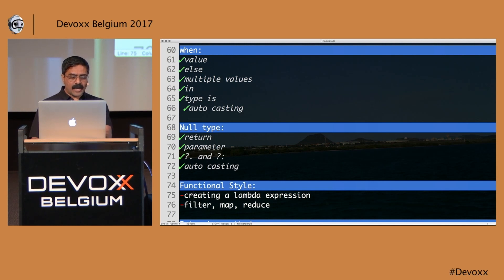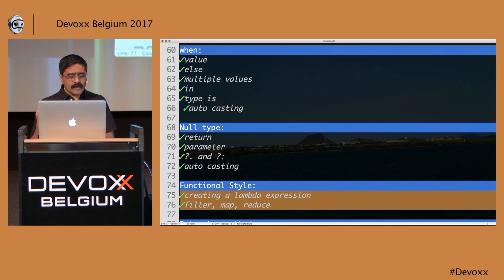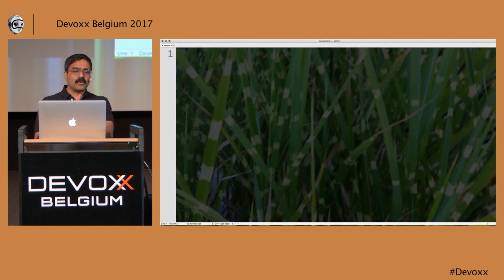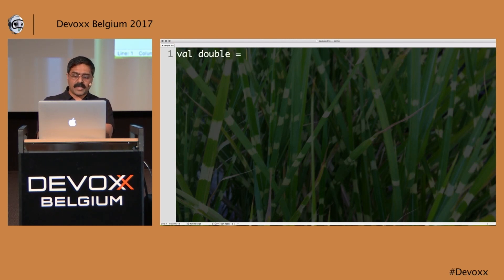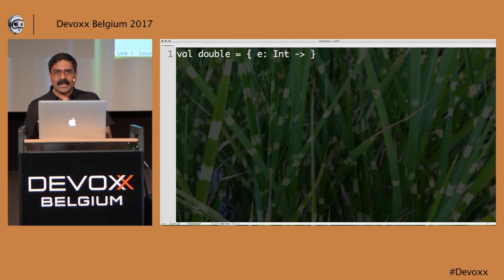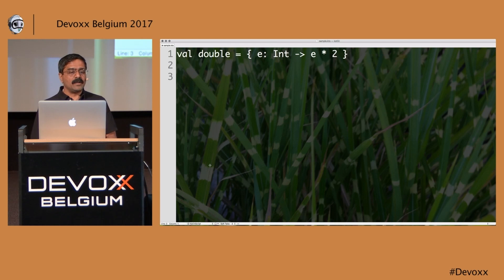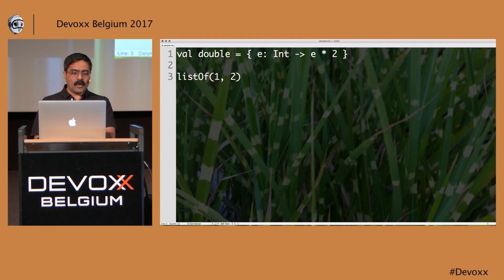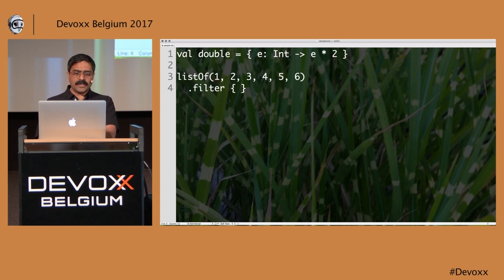What about creating functional style code? We can definitely create lambdas in here. I'm going to create a lambda called double. This lambda takes an argument 'e: Int' and returns e * 2. That becomes my little lambda expression. Now I can say listOf(1, 2, 3, ...) and then call filter — given an element, element mod 2 == 0 — to get even numbers.